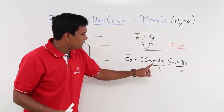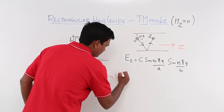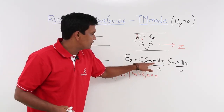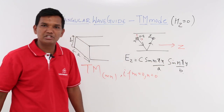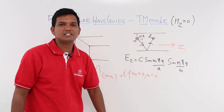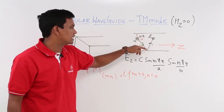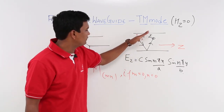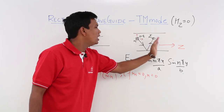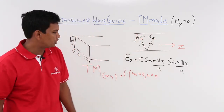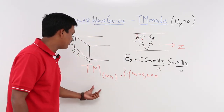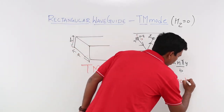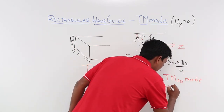If I put m equal to 0 and n equal to 0, what will happen to E_Z? Sin(0) again sin(0). So E_Z will become 0. If E_Z is 0, it means there is no component of electric field along Z. That should not happen, because if the electric field is like this, it should have a component along Z — either plus Z or minus Z. So I cannot have TM mode 0,0. Therefore, TM(0,0) mode will not exist.